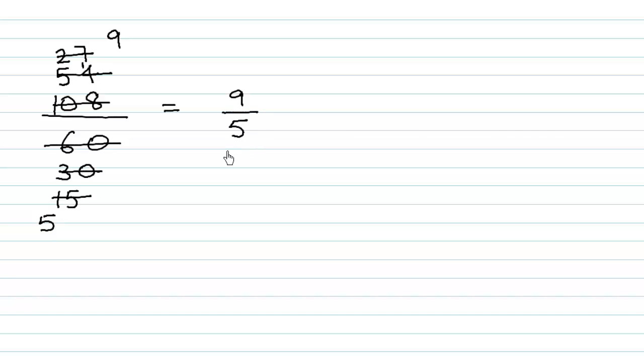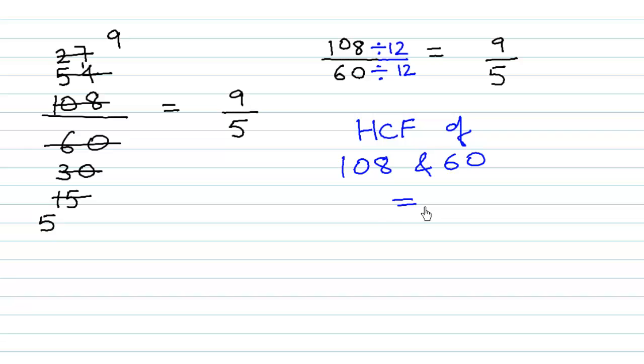So the final answer is 9 over 5. The original fraction was 108 over 60, and its reduced form is 9 over 5. We could have divided 108 by 12 and 60 by 12 directly to get 9 and 5. The HCF of 108 and 60 is 12.